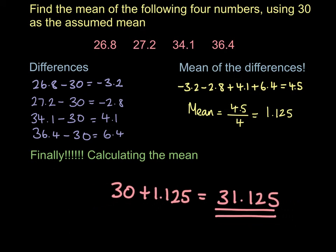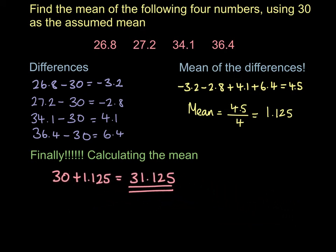So now you can see why you only do that method if you've got an assumed mean in your question. What you do is you take each of those four numbers, you take away the assumed mean to get your differences. That's what we did here in the first step, to get those four numbers.